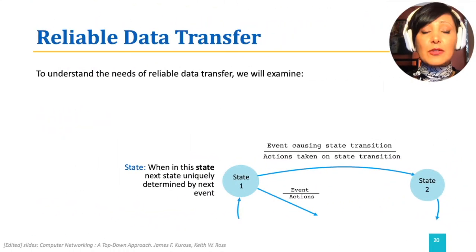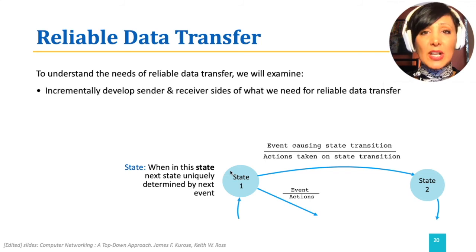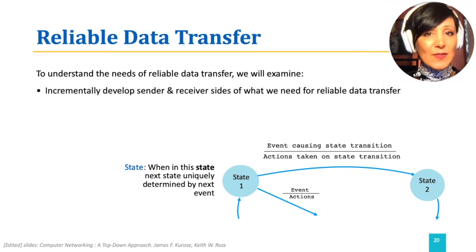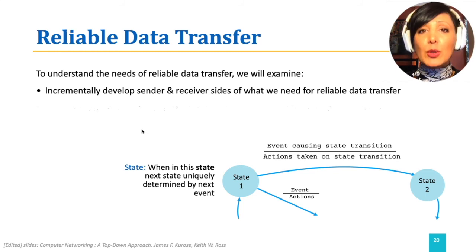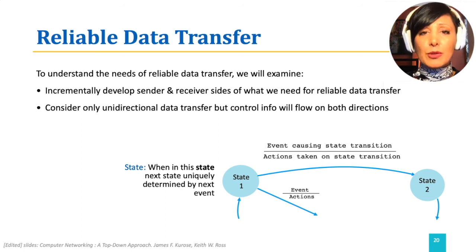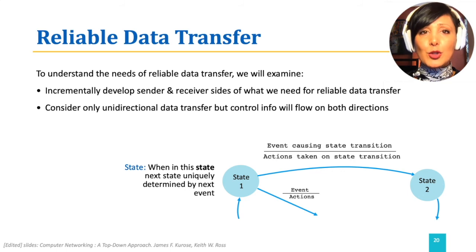To understand the needs of reliable data transfer, we will incrementally develop the sender and receiver sides of what we need for reliable data transfer. We will discuss this for unidirectional data transfer, but control info will flow in both directions. The concepts will be applicable to bidirectional transfer as well.